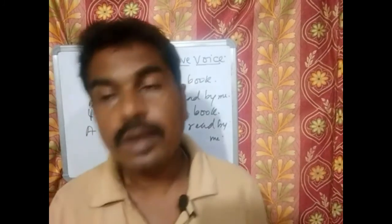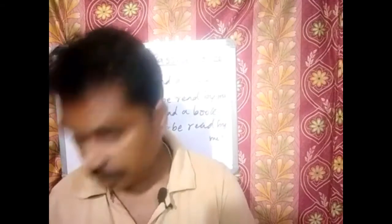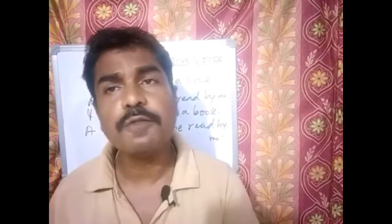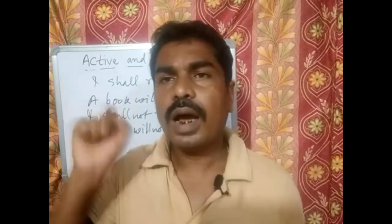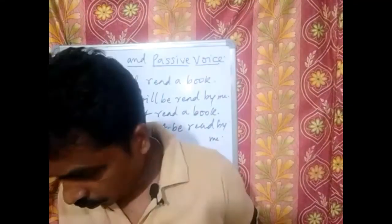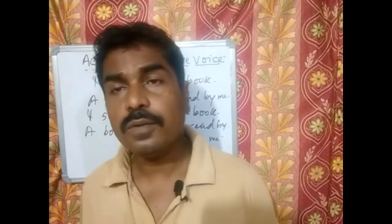In the future perfect form: 'I shall have read a book' becomes 'A book will have been read by me.' For the negative: 'I shall not have read a book' becomes 'A book will not have been read by me.' Interrogative: 'Shall I have read a book?' becomes 'Will a book have been read by me?' Negative interrogative: 'Shall I not have read a book?' — the passive is 'Will a book have not been done by me?' For a WH-question: 'What shall I not have done?' becomes 'What will have not been done by me?'